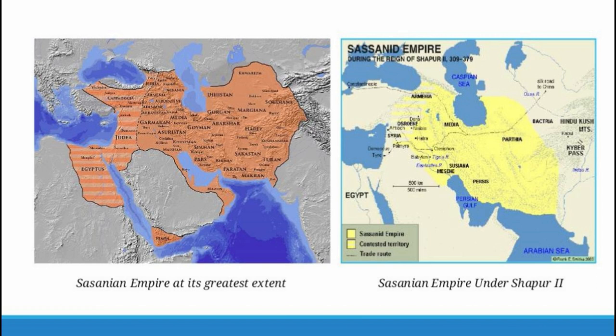At its greatest extent, the empire covered entire areas of Pakistan, Afghanistan, Iran, Iraq, and parts of Syria, Uzbekistan, and so on, which can be seen from the diagram on the next slide. As you can see to the left, we have the Sasanian Empire at its greatest extent.